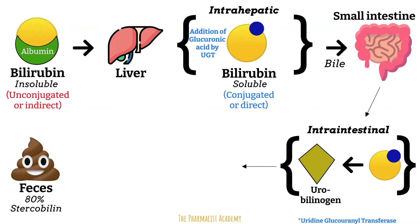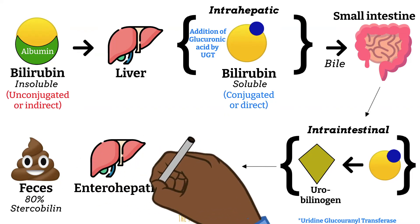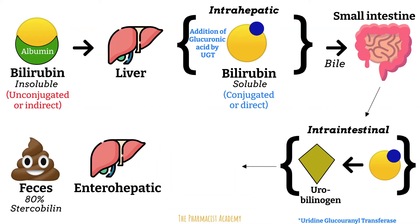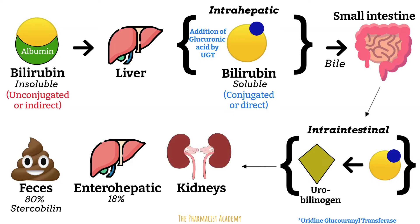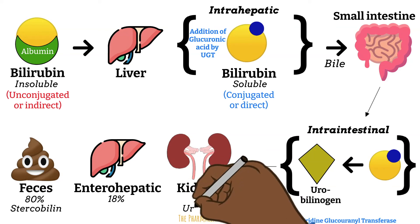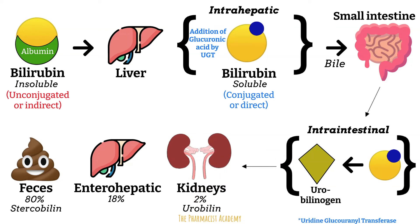About 18% is reabsorbed back into the portal circulation and transferred back into the liver, where the urobilinogen is converted into conjugated bilirubin and then the cycle repeats. About 2% of the urobilinogen enters the systemic circulation and is filtered in the kidney. It gets oxidized into urobilin, and that is what gives the urine its characteristic color.